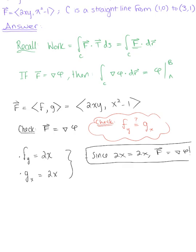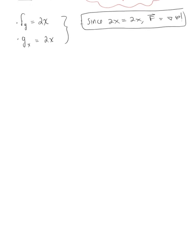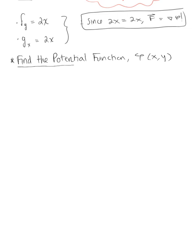We can now apply the fundamental theorem of calculus to find the work of this force field moving the object along our line. To apply this fundamental theorem, we need to find the potential function. Since F is conservative, this implies that the components F and G equal the partial derivative of phi with respect to x and the partial derivative of phi with respect to y, respectively.